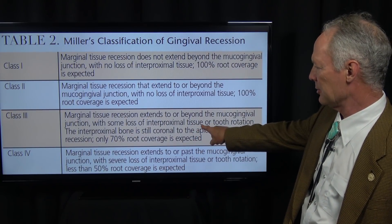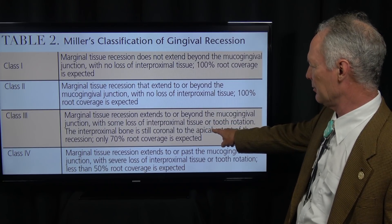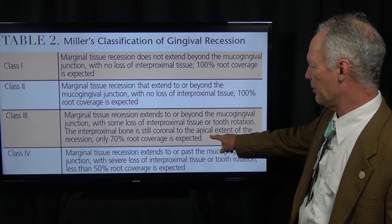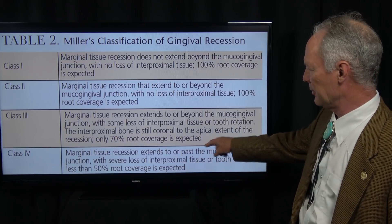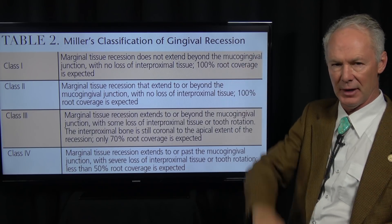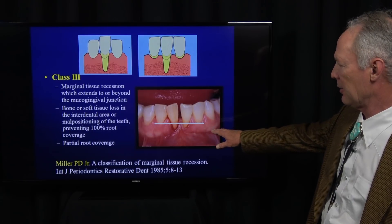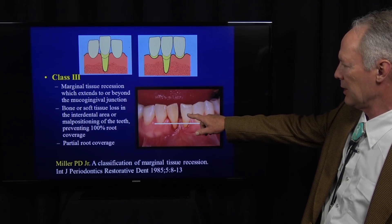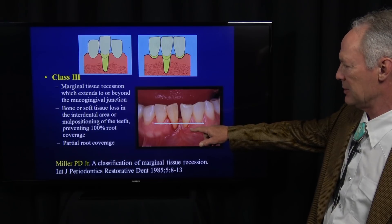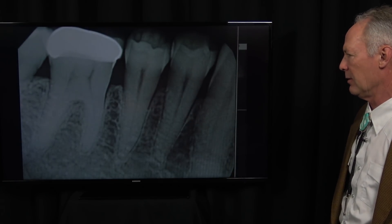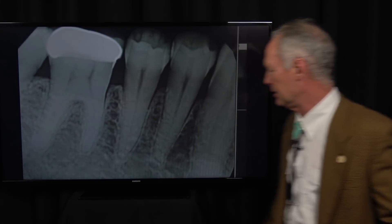I would classify this as a Class 3 — marginal tissue recession extends to or beyond the mucogingival junction with some loss of interproximal tissue or tooth rotation. The interproximal bone is still coronal to the apical extent of the recession, so only 70% root coverage is expected. If the patient has a lot of recession and root exposure, even if the bone is uniform, if it's past the CEJ of the tooth you're not going to get coverage all the way to the CEJ — you're not going to have tissue 5 or 6 millimeters from the alveolar crest of bone. We have some bone loss but a pretty uniform alveolar crest, with no bone loss down to the furcation area of the molar — so we're expecting about 70%, hopefully.